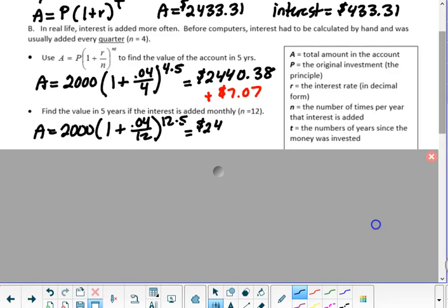I got $2,441.99, which is a little more, but not as much. It's $1.61 more than what I had before.